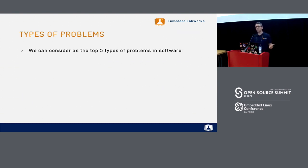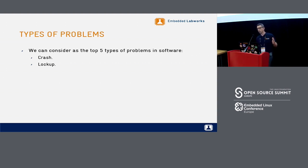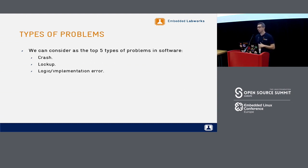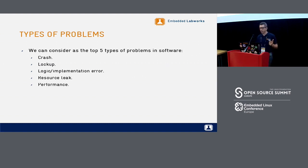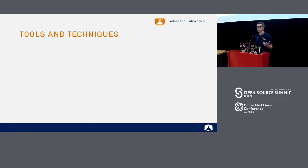There are different kinds of problems we can have in the kernel. We can have crashes — the kernel just crashes, kernel oops, kernel panic — and there are tools to debug those. There are problems like a deadlock, where the kernel hangs and stops working. You could have a logic problem where everything is working but the result is not what is expected. You can have resource leaks like memory leaks, file descriptors, sockets. And you could have performance problems, like CPU usage being too high. So here we have five different kinds of problems, and we could use different tools to debug each one.